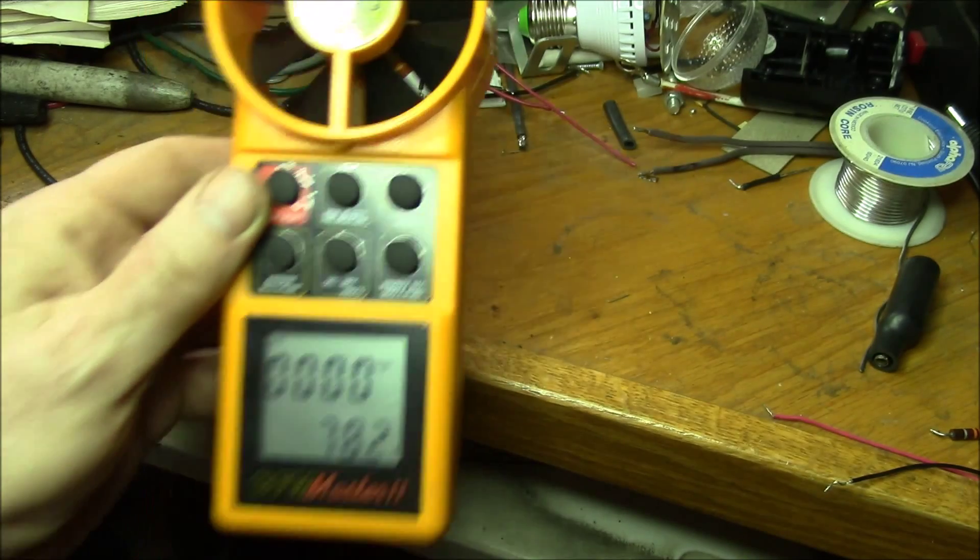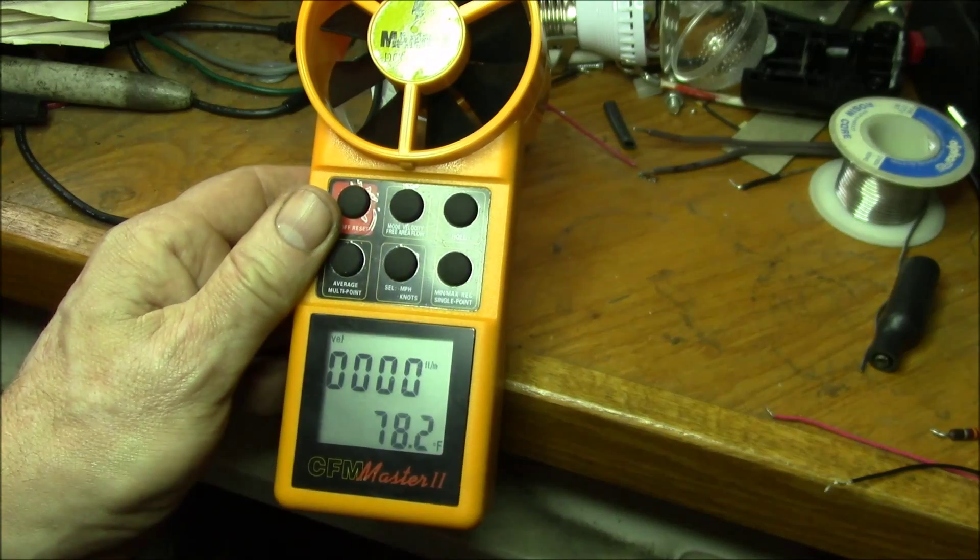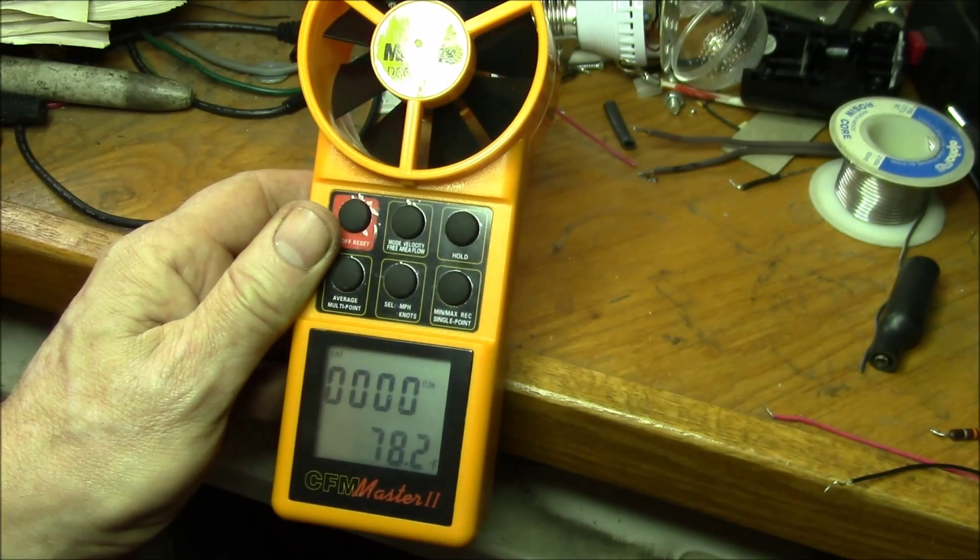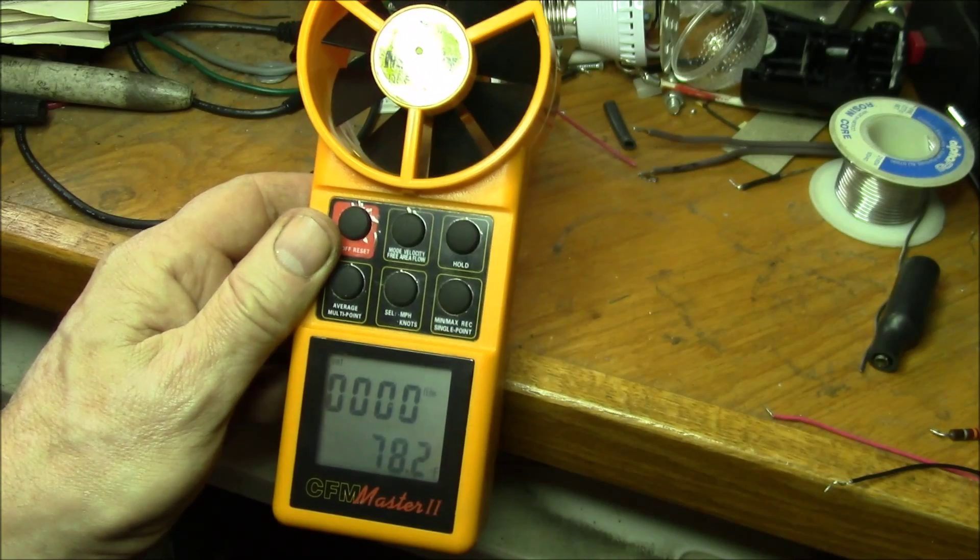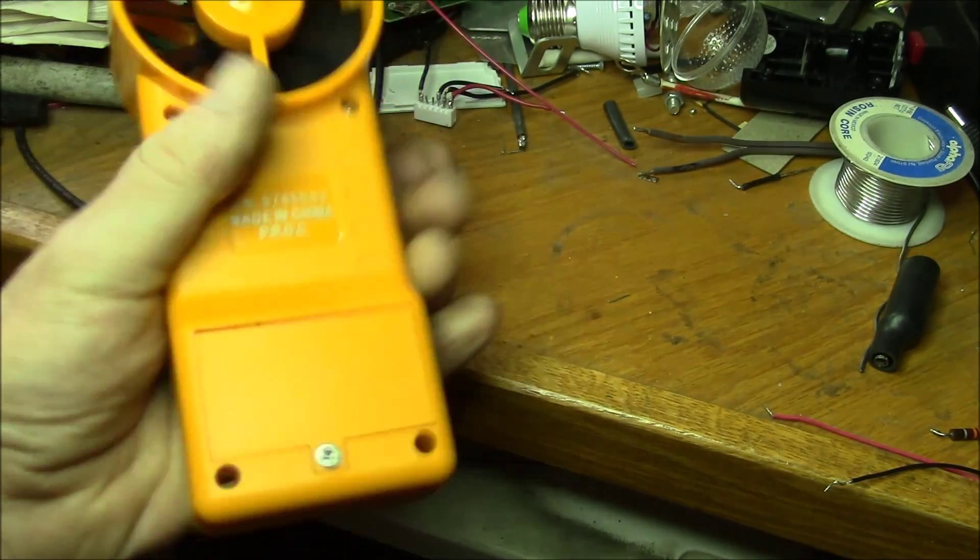So yeah, this is the Mannix CFM Master 2, a little airflow meter with temperature. It's got the little RS-232.